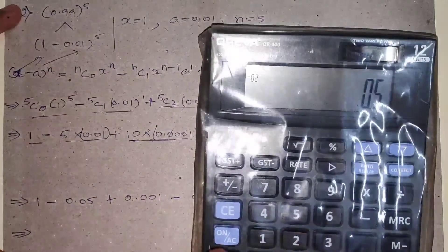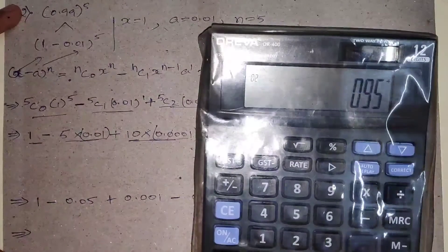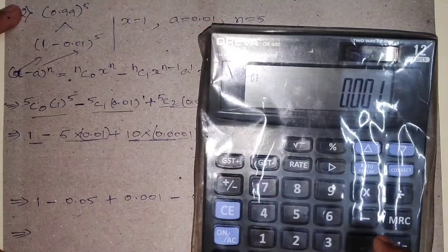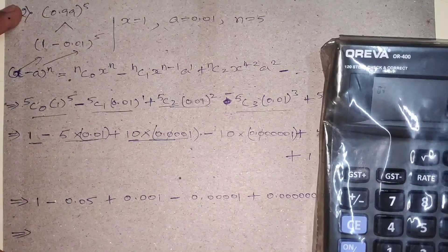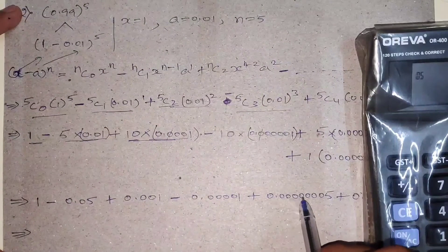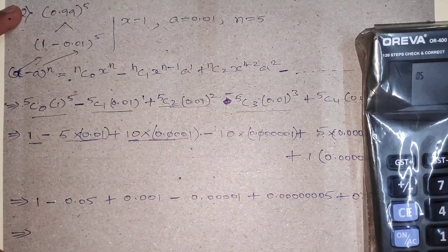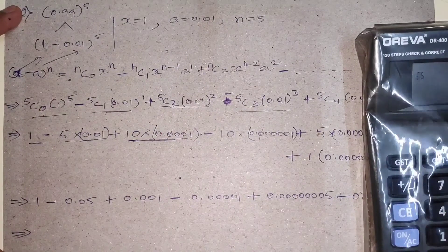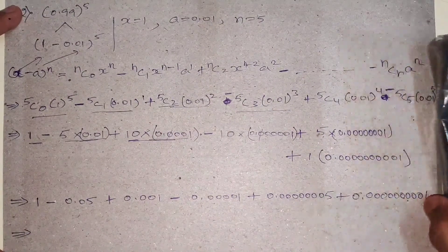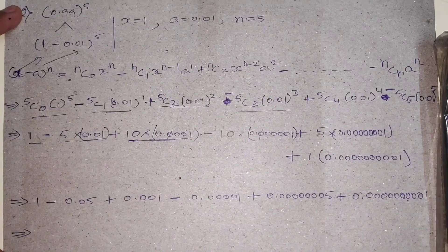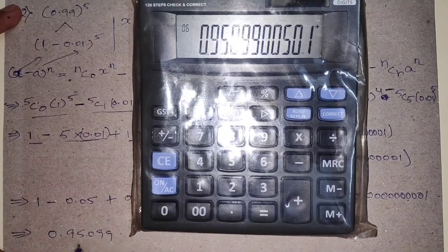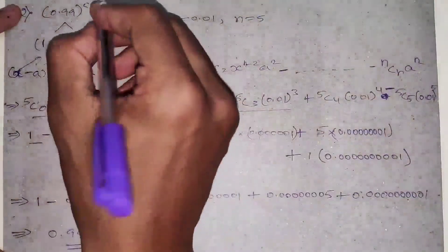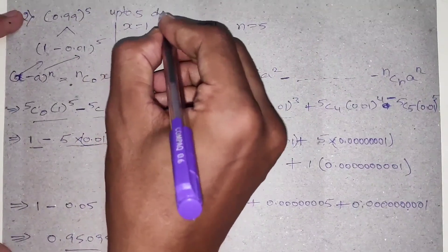Now adding and subtracting all terms: 1 minus 0.05 plus 0.001 minus 0.0001 plus small remaining terms. Adding them all together gives 0.95099. So the answer up to 5 decimal places is 0.95099.